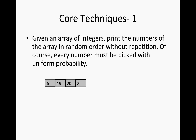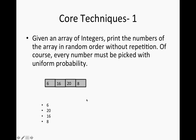This question is very similar to a shuffle function where the songs in a playlist are played in a random order without repetition. In this question, you are asked to print the numbers in this array in a random order without repetition. For example, this is a valid output — 6, 20, 16, 8.